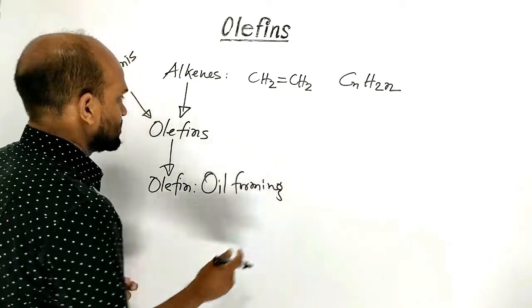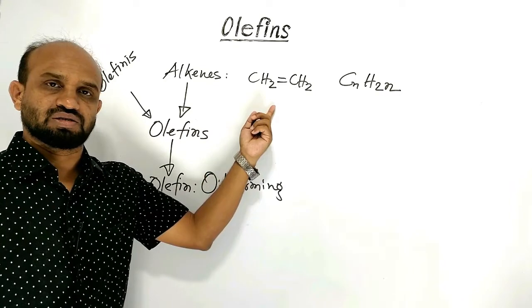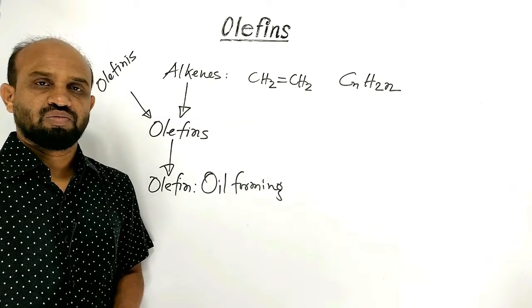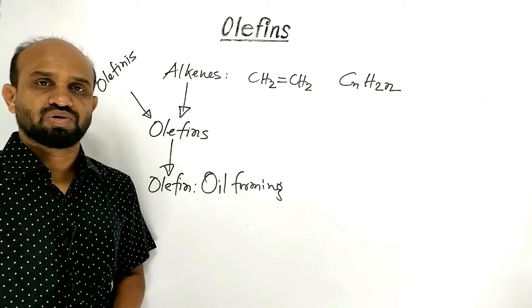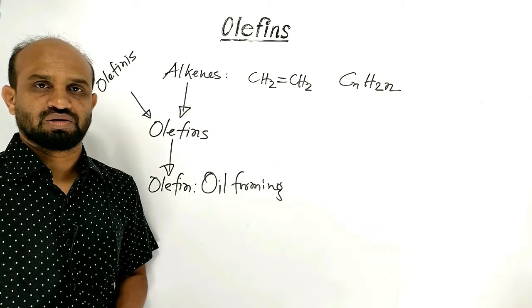That is, first members of alkenes, ethene and propene, form oily compound reacting with chlorine or bromine. Let's see.